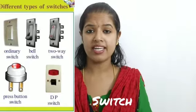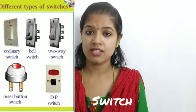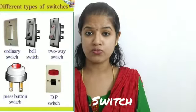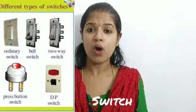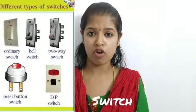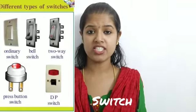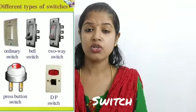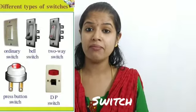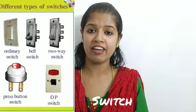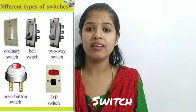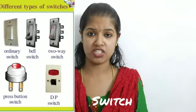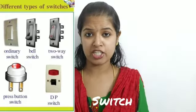Next is the two-way switch, which is used in bedrooms. You might have noticed that one switch is fixed to the switchboard on the wall and another switch is fixed on the wall near the bed. Both control the same electrical appliance — for example, a fan. You can turn it off from either switch. It is especially seen in bedrooms.